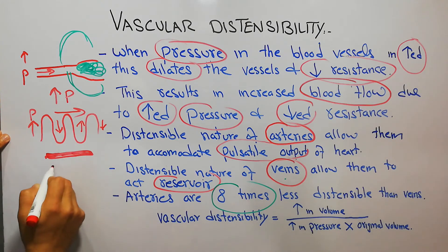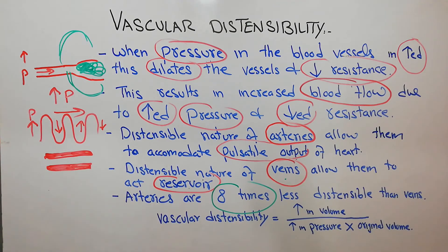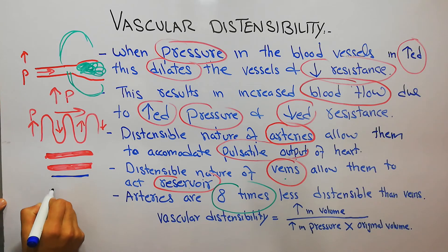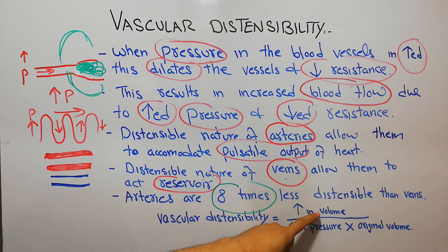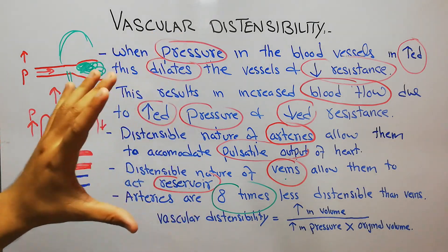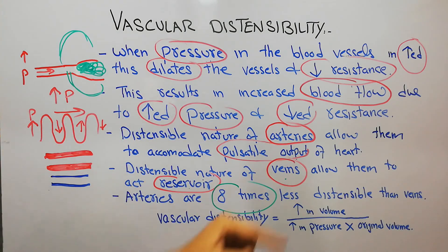The wall of the arteries is thicker, while the wall of the veins is very thin, making veins more distensible. Veins can therefore accumulate more blood and act as a reservoir. Vascular distensibility is calculated as the increase in volume for an increase in pressure. That covers vascular distensibility of the blood vessels and its function in arteries and veins.